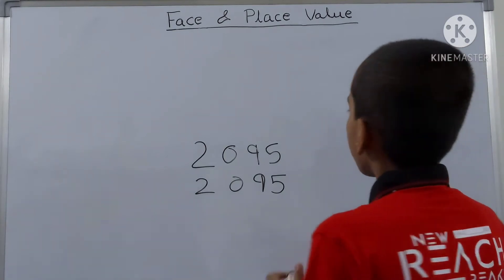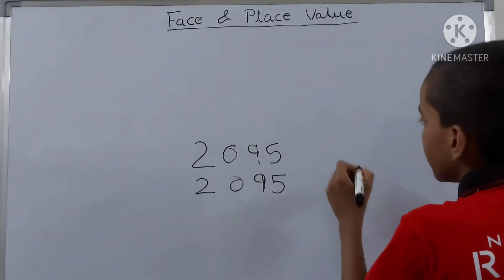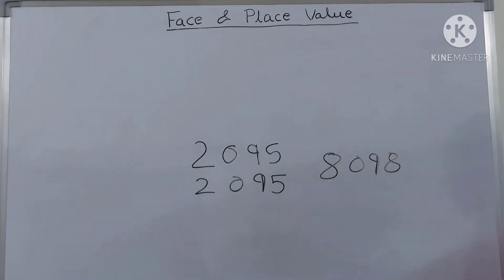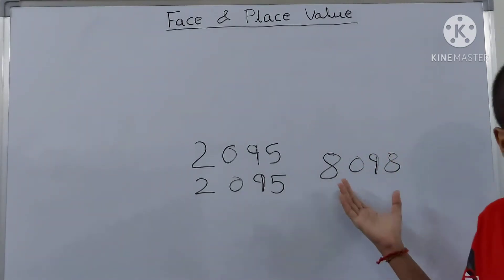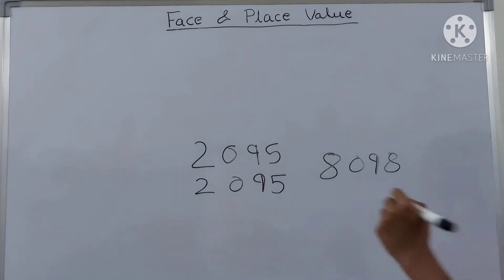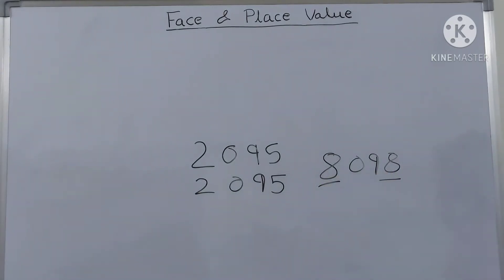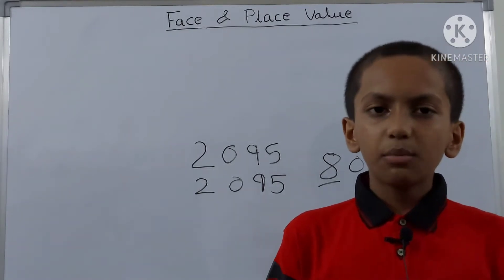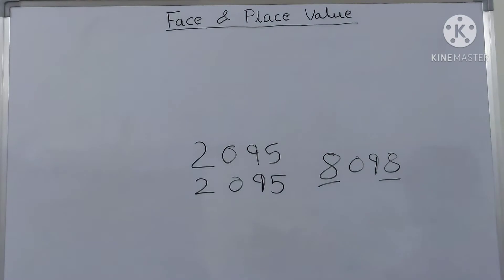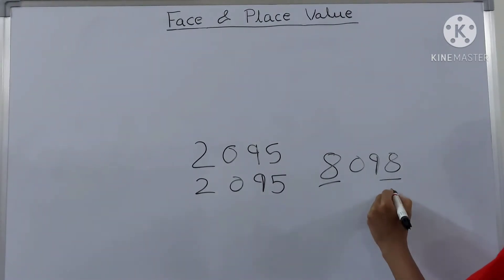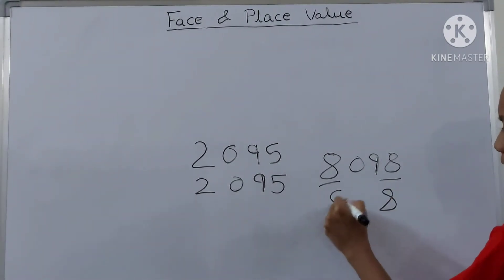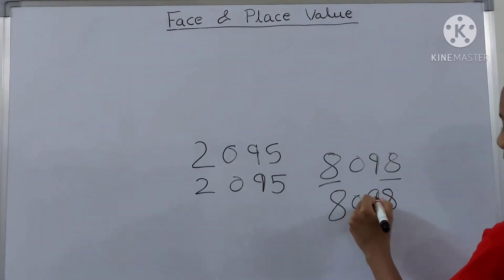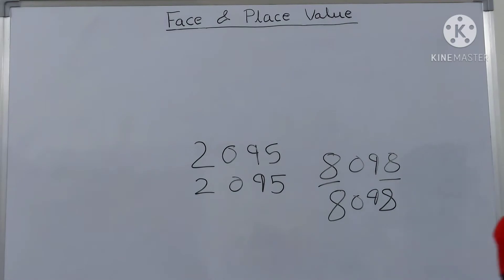Let's see one more example. Let's take 8098. Now, what will be the face value for these 8s? Whenever there is any common number in any number, it is the same only — the face value never changes. Which means the face value here will be 8 only. Nothing to do. These two digits' face value will be the digit itself only.